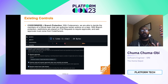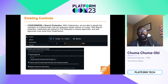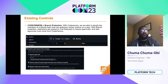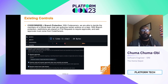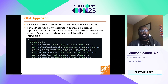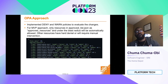The existing controls we had prior to OPA were basically branch protection on the main branch and code owners, where our team are the only ones allowed to approve pull requests. Every pull request had to be approved by the team before it could go anywhere. Our OPA approach then introduced deny or warn policies as an MVP.